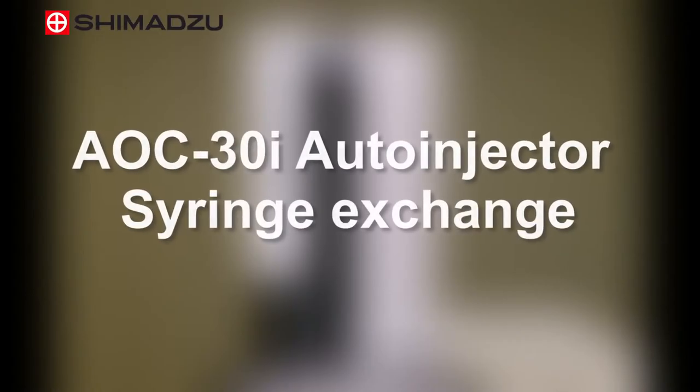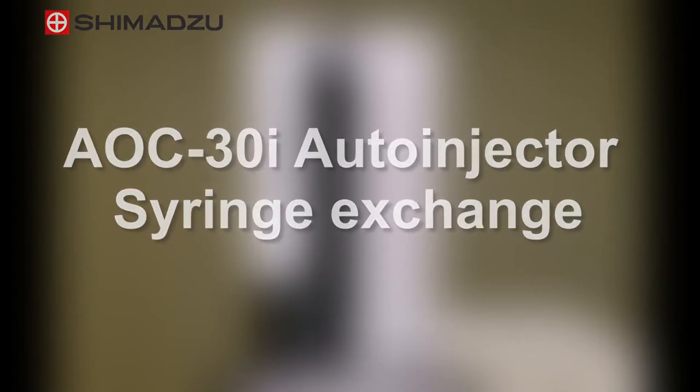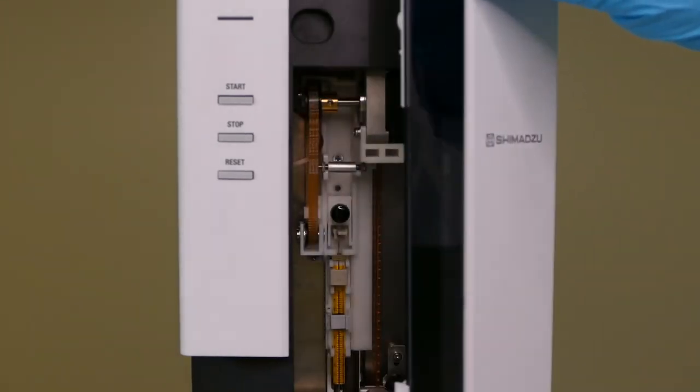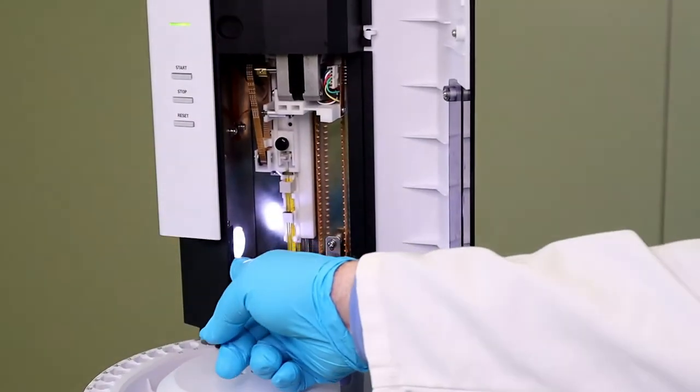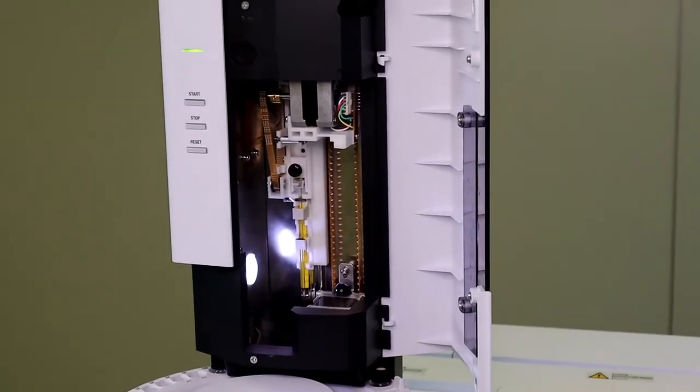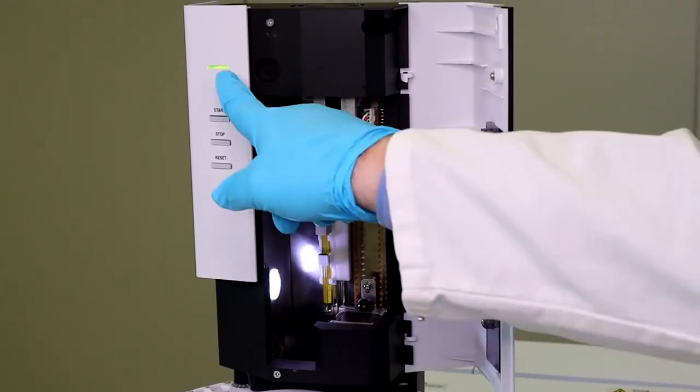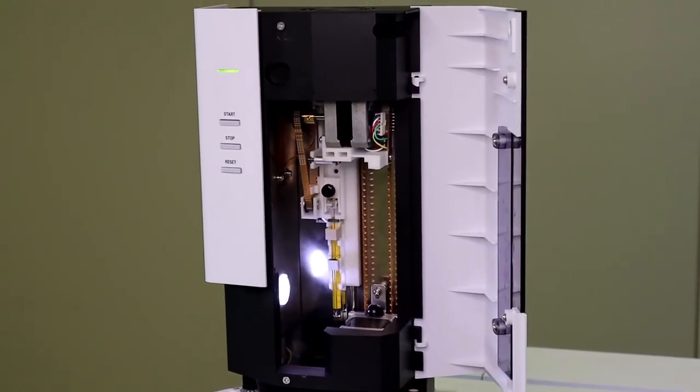The AOC30i auto-injector can operate liquid syringes within volumes of 0.5 to 250 microlitres. When opening the front door for syringe exchange, the injector light switches on and shows the installed syringe.